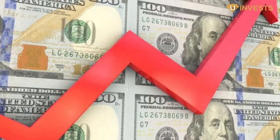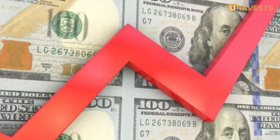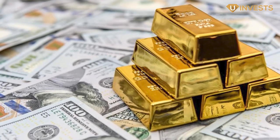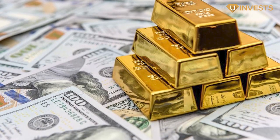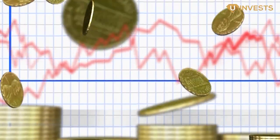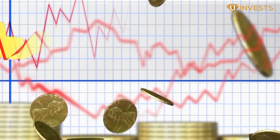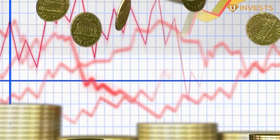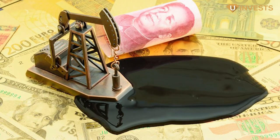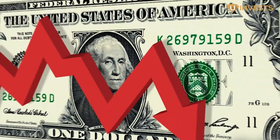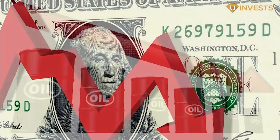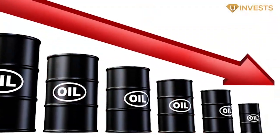In 1971, U.S. stagflation prompted runs on the dollar, and many countries asked to redeem their U.S. dollars for gold. To protect the remaining U.S. gold reserves, President Richard Nixon removed the dollar from the gold standard. As a result, the dollar's value plummeted, which helped the U.S. economy as its export values also decreased, making them more competitive.